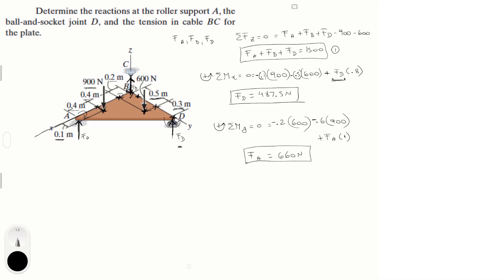And with the value of F of D and the value of F of A, we plug them into equation one and you're gonna get that F of B is equal to 1500 minus F of D minus F of A. So F of B is equal to 352.5 newtons. So final answer: F of D, F of A, and F of B.